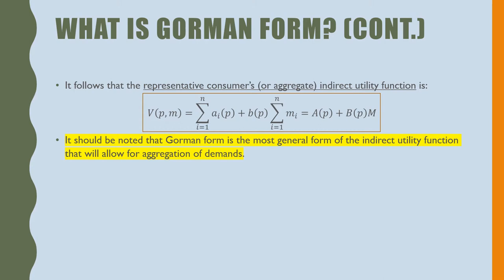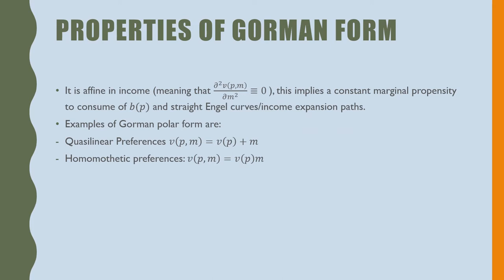It should be noted that Gorman Form is the most general form of indirect utility function that allows for aggregation of demands. So that's a unique property of Gorman Form.